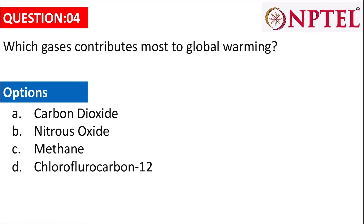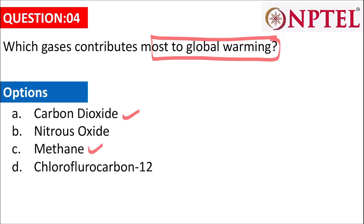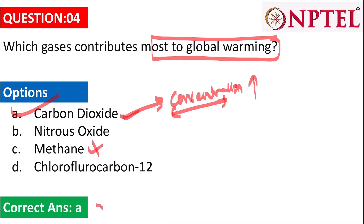The next question asks which gas contributes most to global warming. There may be confusion between carbon dioxide and methane. Carbon dioxide's concentration is very high, so the answer is carbon dioxide — answer A. The global warming potential of methane is more than carbon dioxide, but the concentration of carbon dioxide is higher, so it contributes more. If the question were about global warming potential, the answer would be methane.